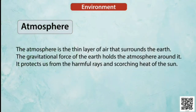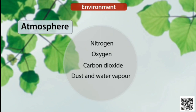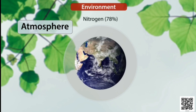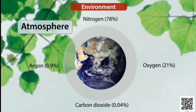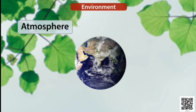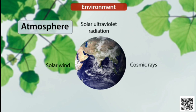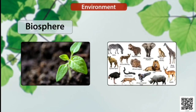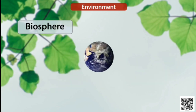The atmosphere is the thin layer of air that surrounds the earth. The gravitational force of the earth holds the atmosphere around it, protecting us from harmful rays and the scorching heat of the sun. It consists of gases, dust and water vapor, and changes in the atmosphere produce changes in weather and climate. The atmosphere is composed of nitrogen (78%), oxygen (21%), argon (0.9%), carbon dioxide (0.04%) and other gases in trace amounts. The atmosphere helps to protect living organisms from genetic damage by solar ultraviolet radiation, solar wind and cosmic rays.